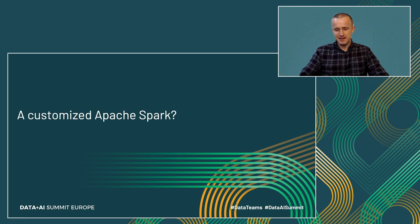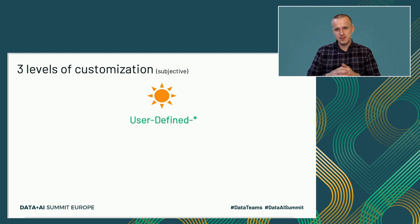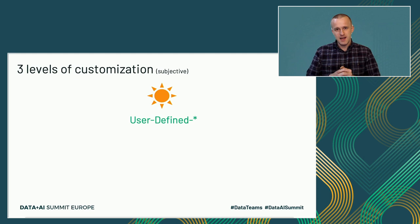So what does it mean to customize Apache Spark? From my perspective, we can distinguish three different layers. The first layer I call the Sunny Layer because it doesn't require you to know anything about Apache Spark internals. You just define your code and it's pushed down to the Apache Spark engine and executed. In this category you will find everything which starts by user-defined, so user-defined functions or user-defined aggregate functions.